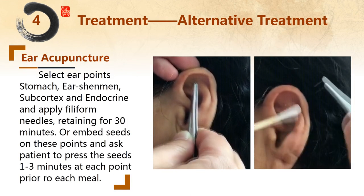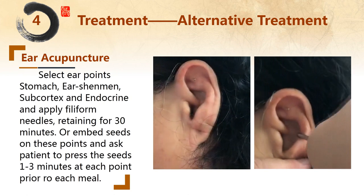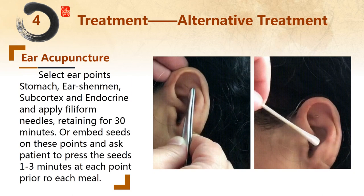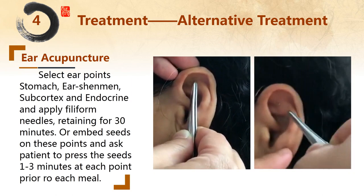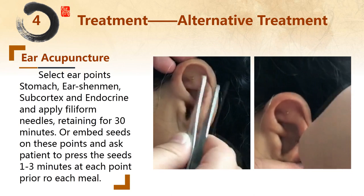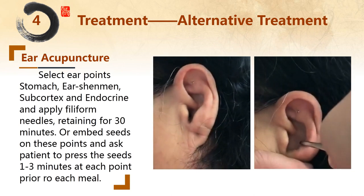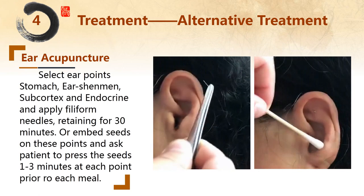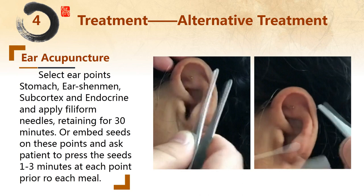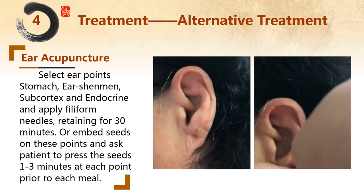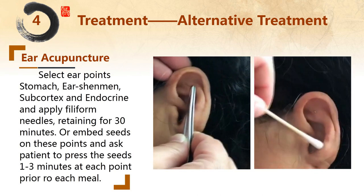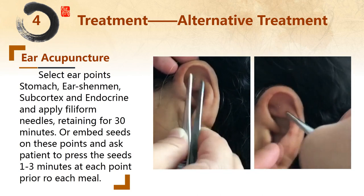The alternative treatment includes ear acupuncture and electroacupuncture. For ear acupuncture, select the ear points: hunger point, stomach, ear Shenmen, endocrine, and apply filiform needles. Retain for 30 minutes, or embed seeds on these points and ask the patient to press the seeds 1 to 3 minutes at each point prior to each meal.